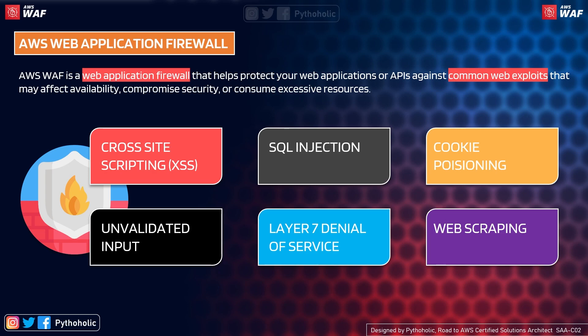The first one is cross-site scripting, or XSS. Here you insert a malicious script which acts as a proper request so that you can manipulate the object model and APIs to execute malicious code. XSS attacks occur when an attacker uses a web application to send malicious code, generally in the form of browser-side scripting, to a different end user.